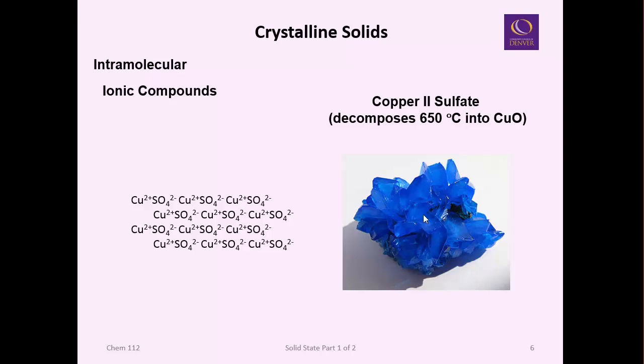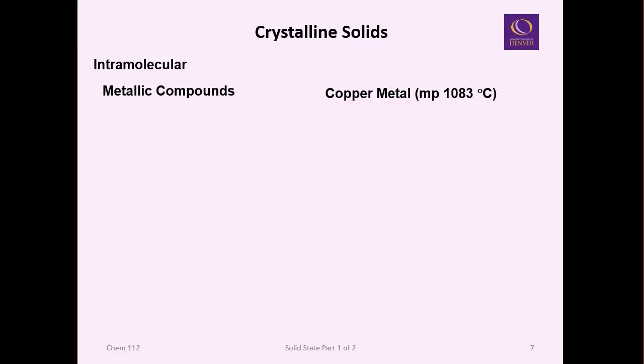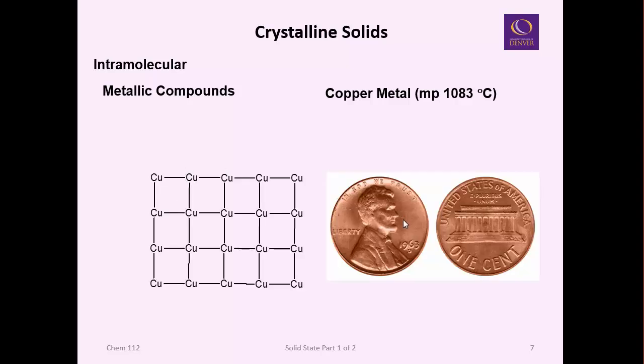If that were an error, the lattice energy would break and oxygen could react with the copper to make copper oxide. Finally, metallic compounds, like copper in a copper penny. These basically are loosely shared electrons in a metallic bond. This has a very high melting point.